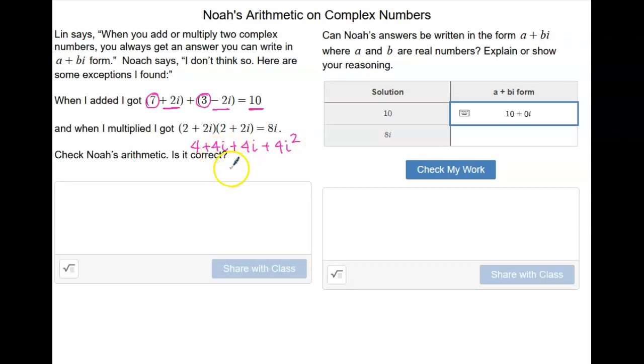So we know that 4i plus 4i is going to give us 8i. We also know that 4i squared just changes the sign. So this would be 4 minus 4, which is 0 plus 8i. So the way that we could write this in a plus bi form would be 0 plus 8i.